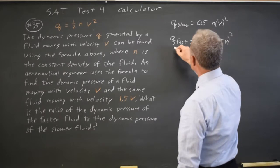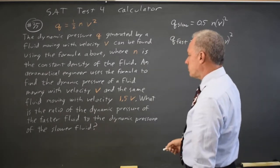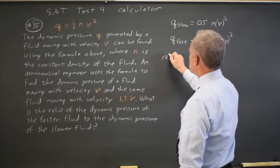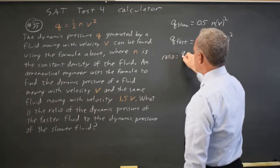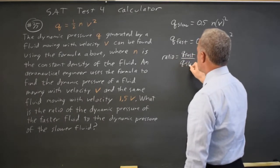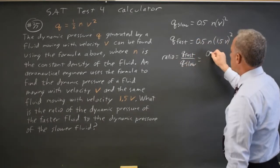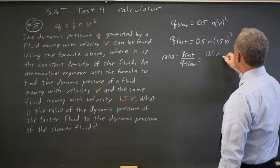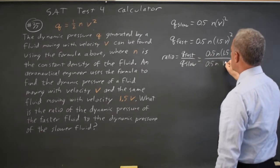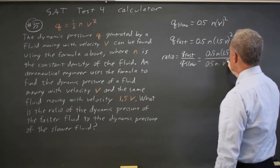So Q fast over Q slow is the ratio of the faster to the slower. So our ratio, which is Q fast over Q slow, is 0.5N times 1.5V quantity squared over 0.5N times V squared.